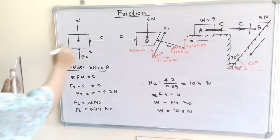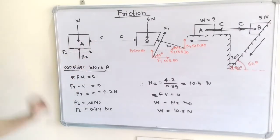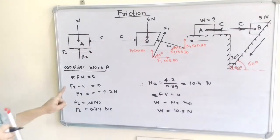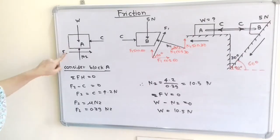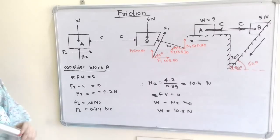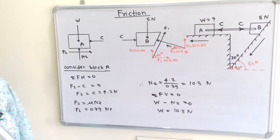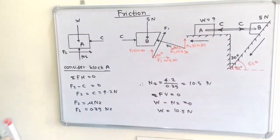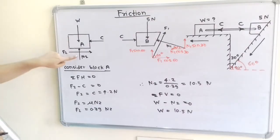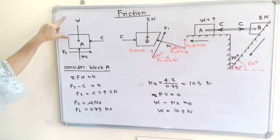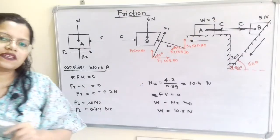Considering equilibrium for block A, taking summation of all horizontal forces equal to zero: F2 and C are opposite in direction, so F2 = C = 4.2 N. Using the law of friction, F2/N2 = mu = 0.39, so N2 = F2/0.39 = 4.2/0.39 = 10.5 N. Taking summation of all vertical forces equal to zero, W = N2 = 10.5 N. This is the weight required for block A to keep the system in equilibrium.